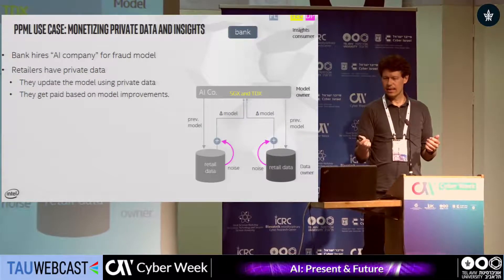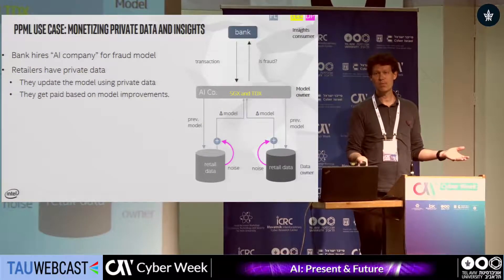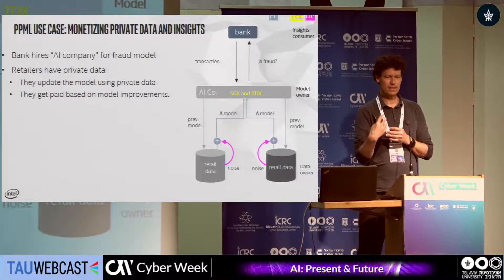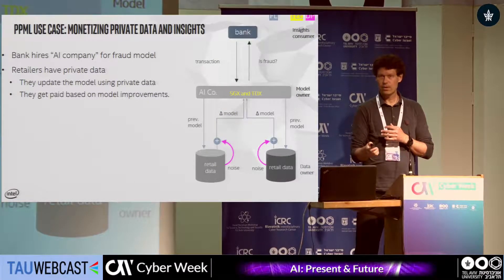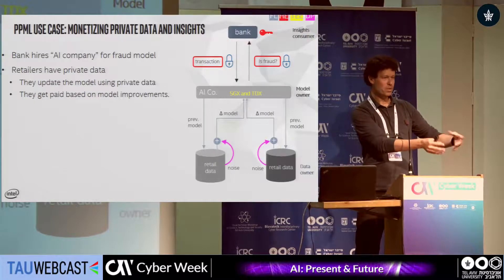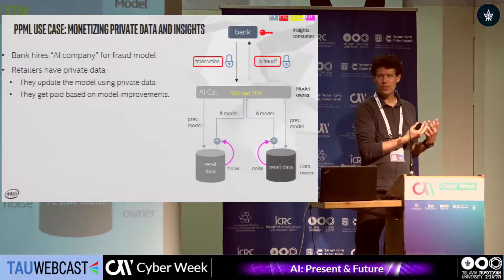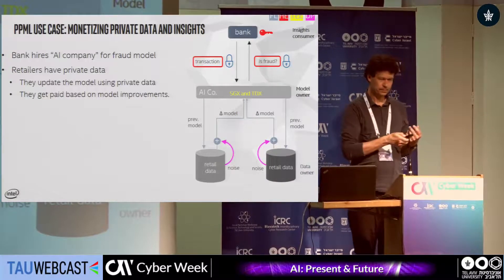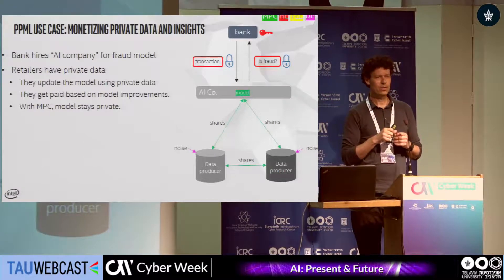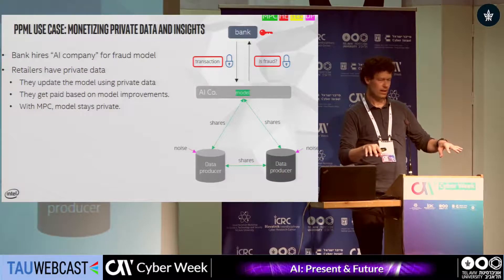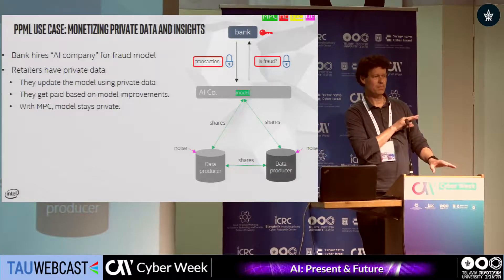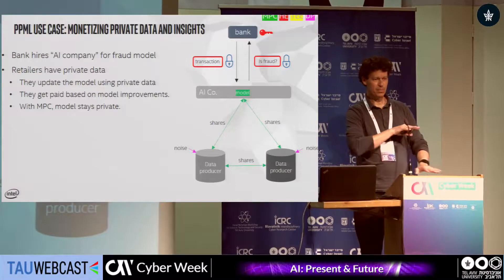Now we have the model, and the bank wants the AI company to host it for inference. But individual transactions — credit card numbers, individual purchases — are very sensitive. Homomorphic encryption lets the bank encrypt the transaction, send it to be processed entirely in the encrypted domain, and receive back an encrypted answer that only the bank can unlock. For extra protection, multi-party computation can also prevent federation members from seeing the model they're helping to train.